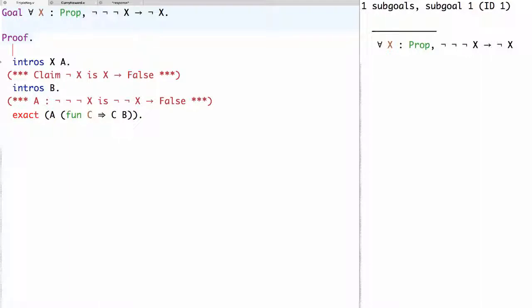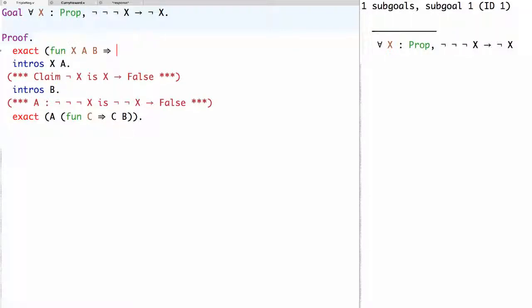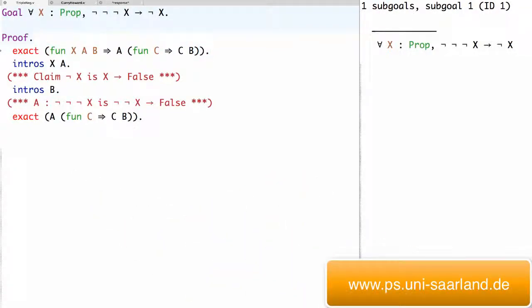So let's go back to the beginning of the proof and simply give the full proof term as lambda x, a, b. And then the body of the lambda is what we have as an exact below. It's a applied to lambda c, c b. And so we're done.